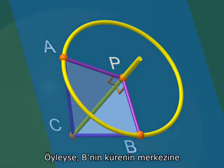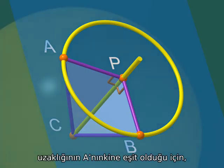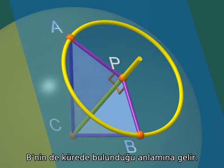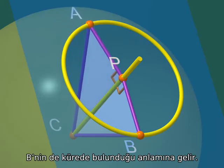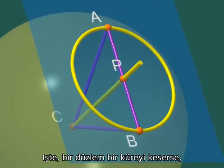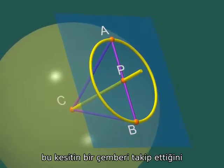This means that the point B also lies on the sphere, since it is at the same distance from C as A. That's it. We have proved that when a plane cuts a sphere, the cross-section is a circle.